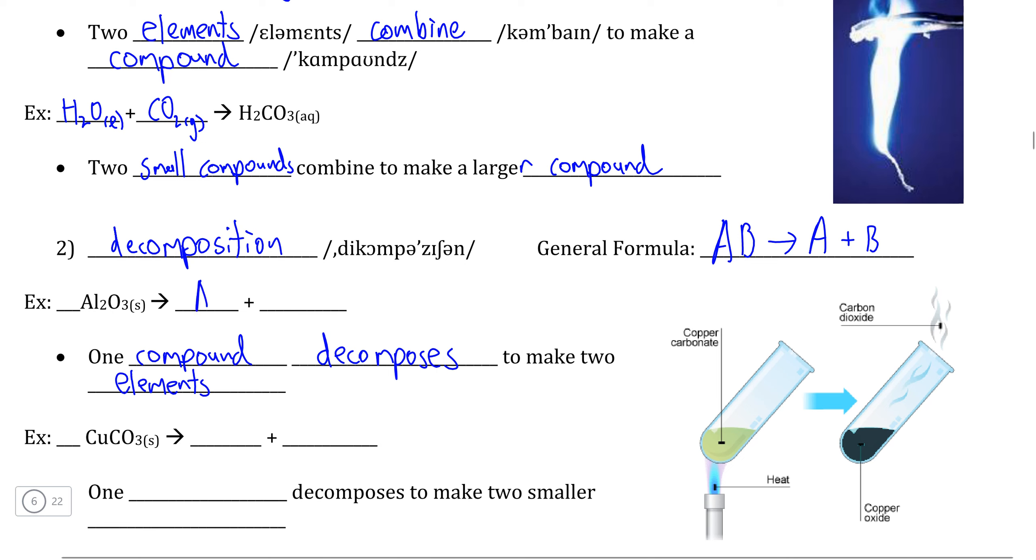And because aluminum and oxygen are the elements that make up aluminum oxide, we can decompose this compound into aluminum metal and into oxygen gas, which we represent as being O2 because oxygen is a diatomic compound.